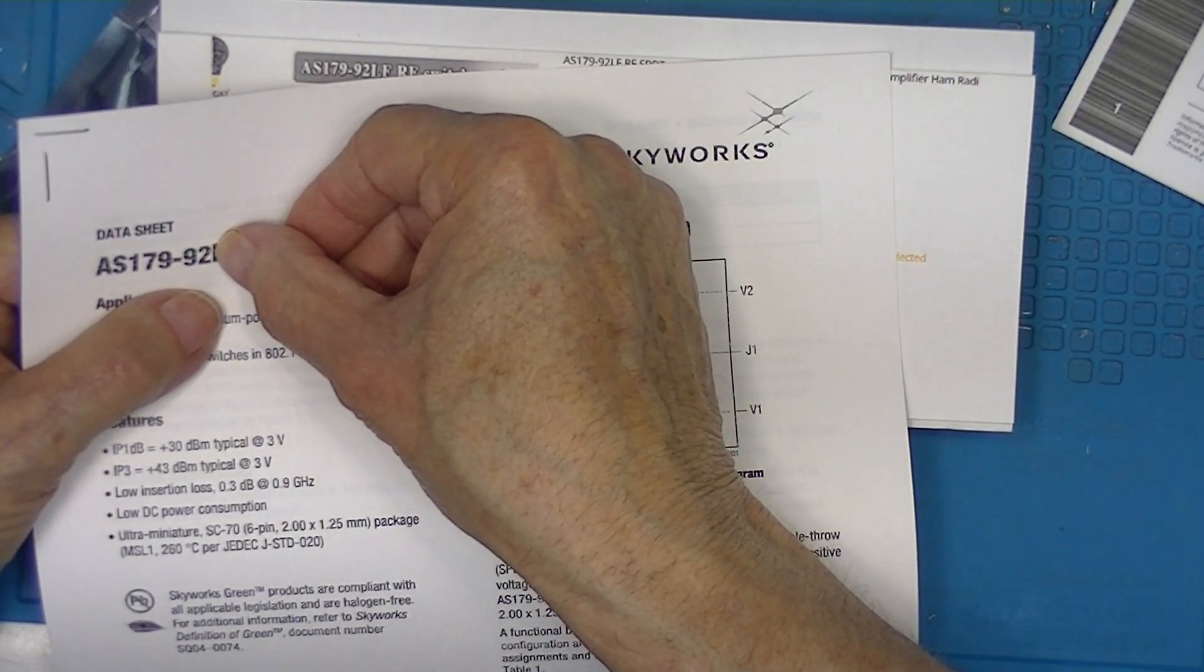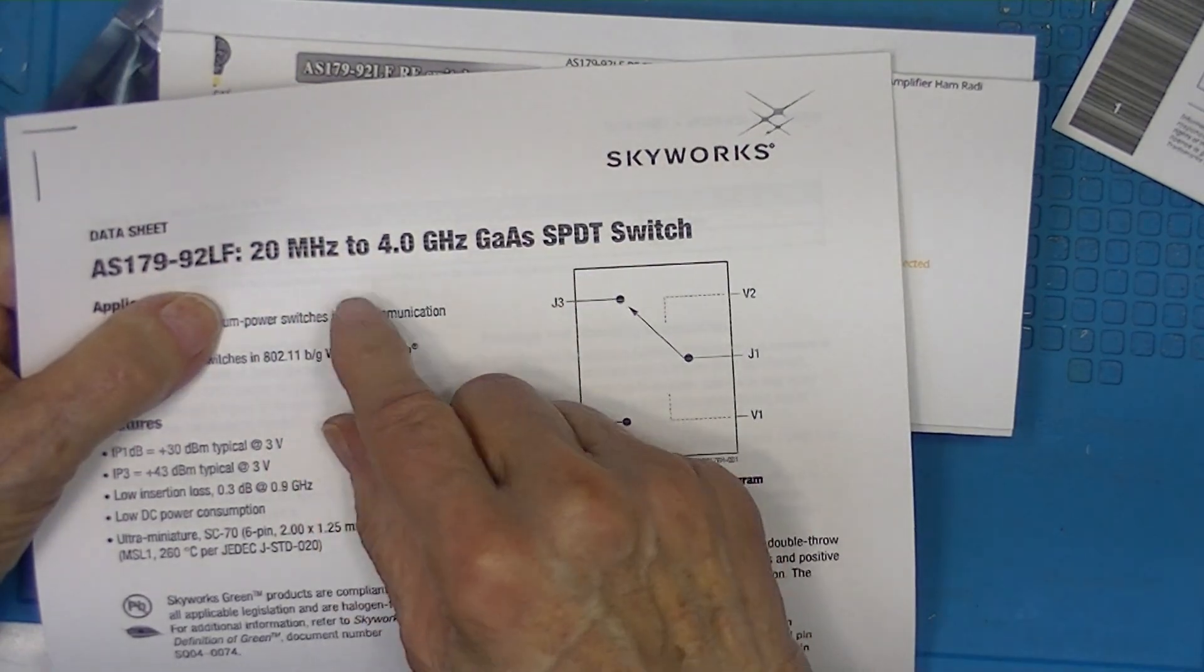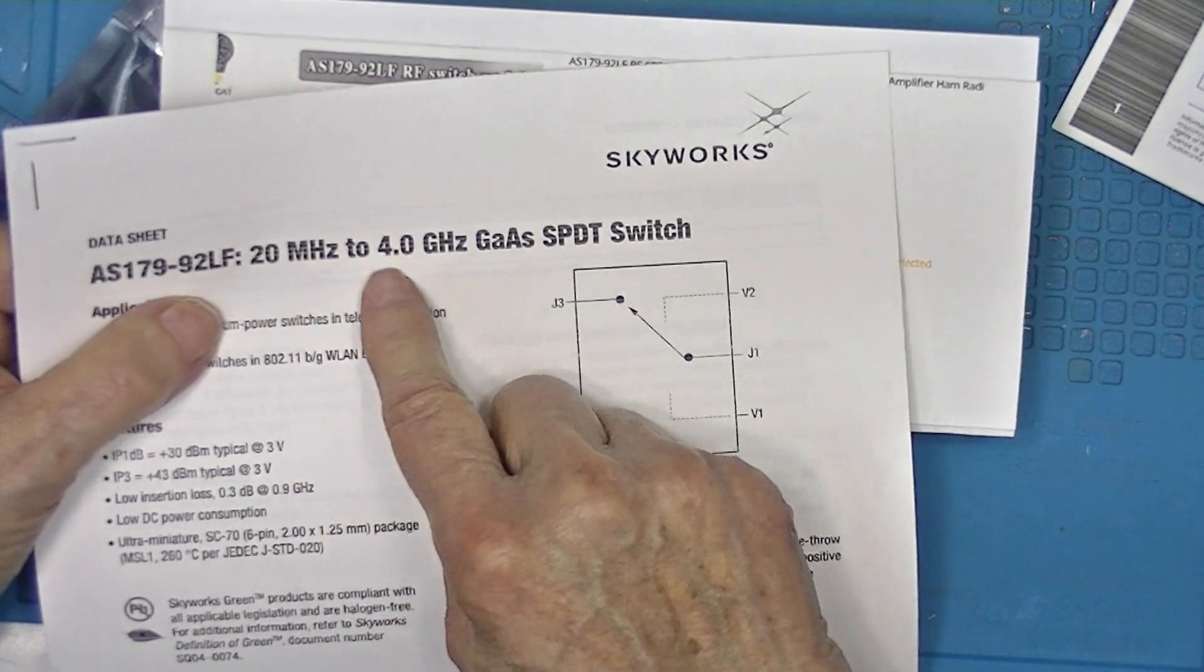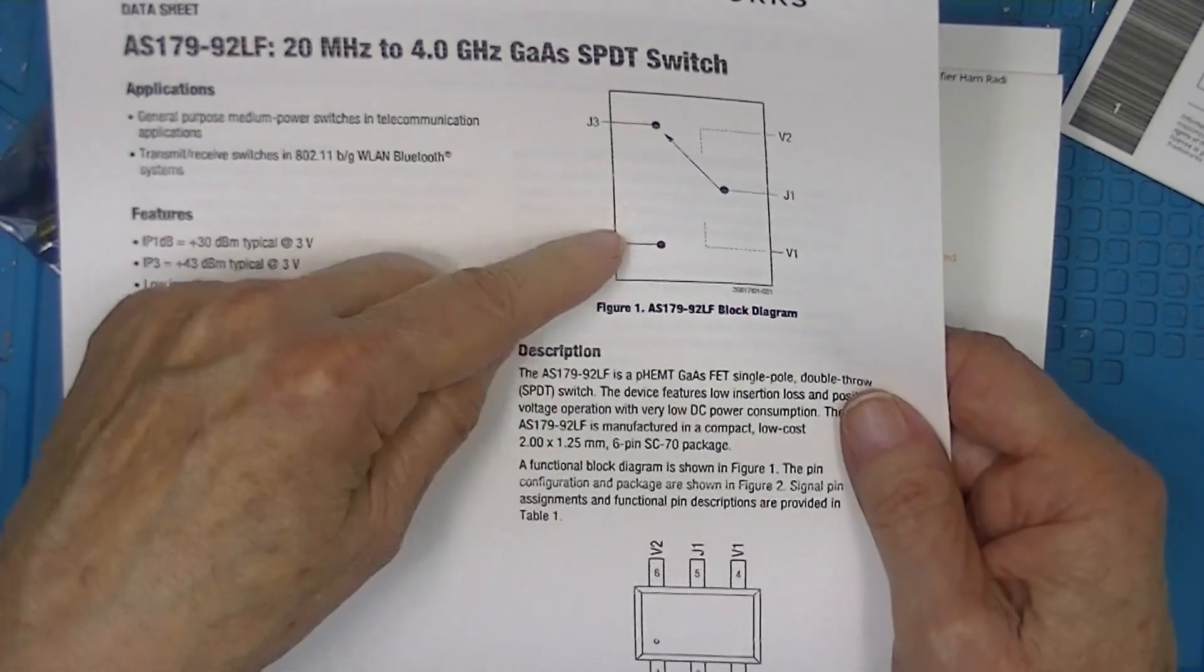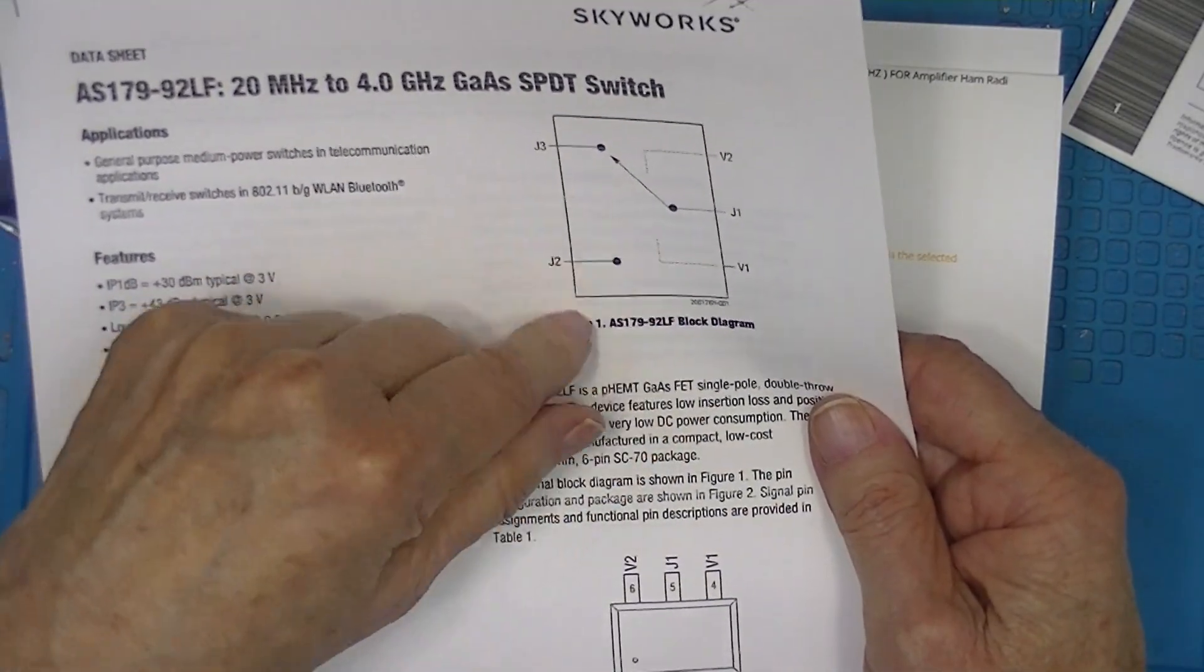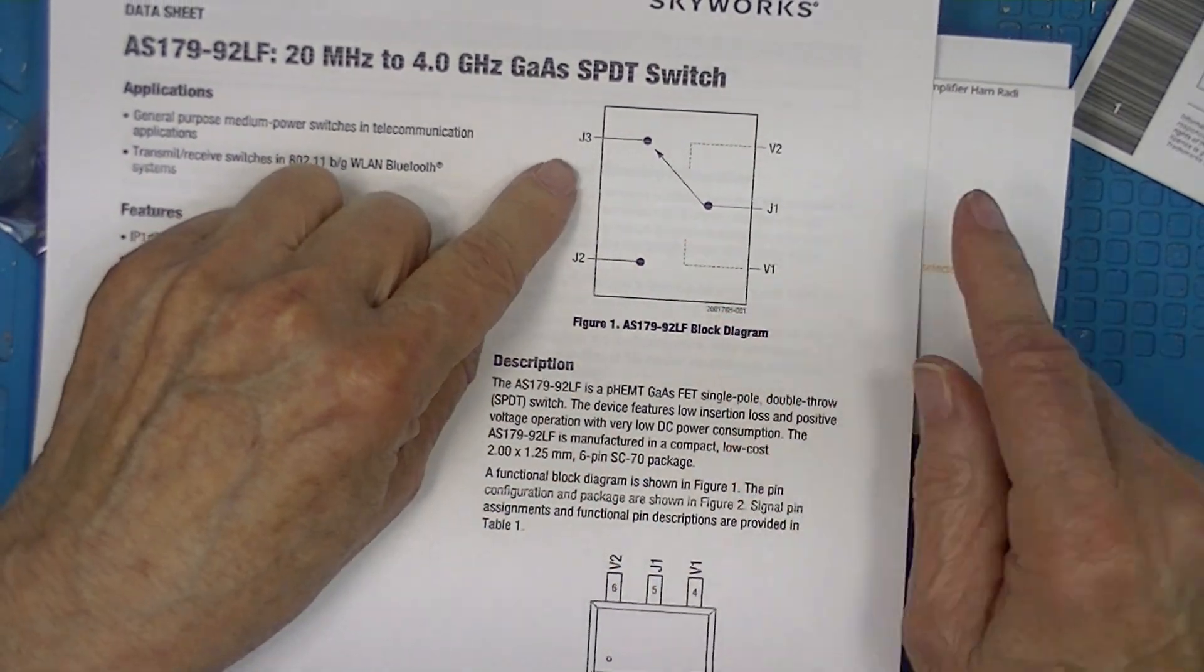The 92 was described as a DC to I think 6 gigahertz device. This is identified as 20 to 4 gigahertz. It just leaves the unused input unterminated.